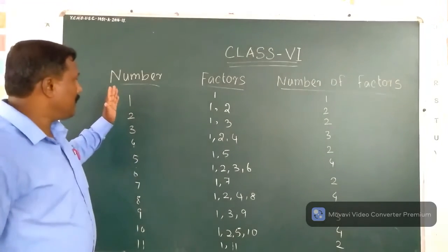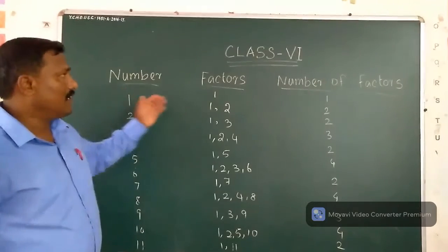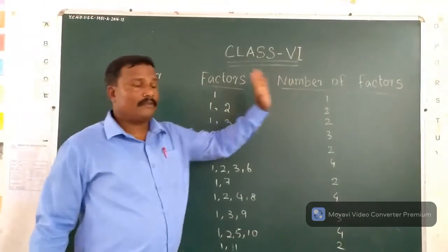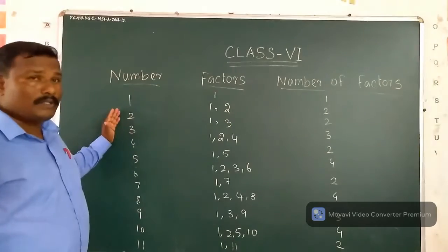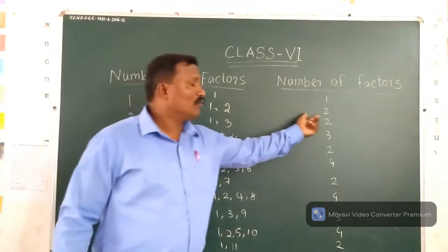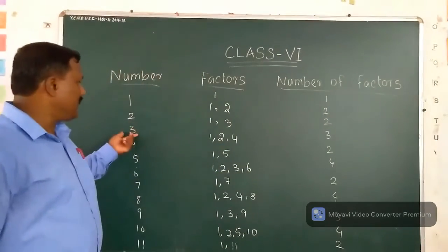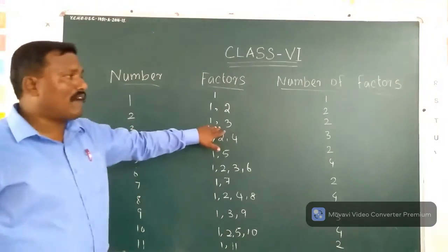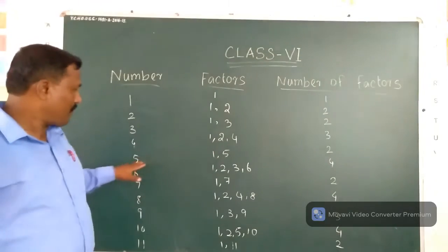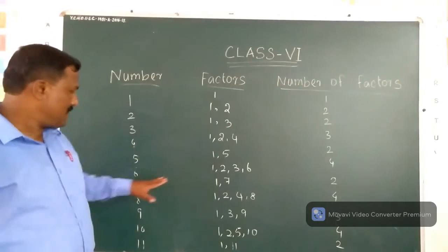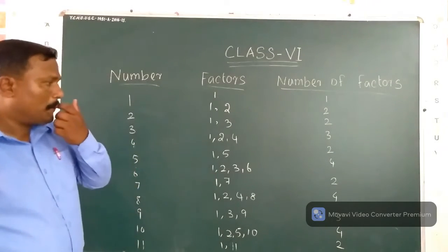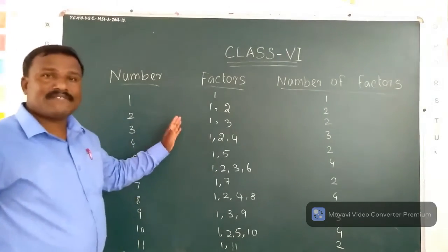First of all, the number 1 has only one factor, so the number of factors is 1. Then number 2 has 2 factors: 1 and 2. Then 3 has 2 factors. Then 4 has 3 factors. Then 5 has 2 factors. Then 6 has 4 factors. So you know what a factor is.